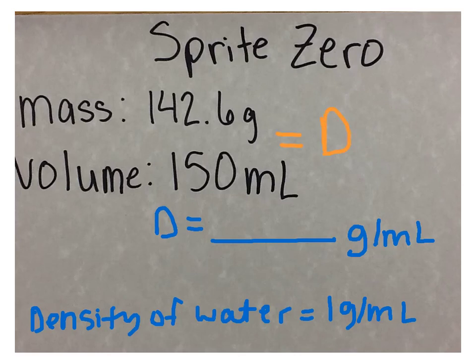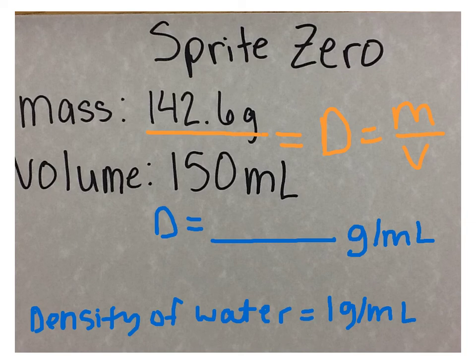To determine the density of a liquid, you must take mass divided by volume. The mass of the Sprite Zero is 142.6 grams. The volume of the Sprite Zero is 150 milliliters. When I take 142.6 grams divided by 150 milliliters, I get 0.951 grams per milliliter as the density.